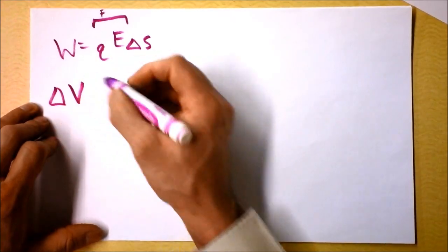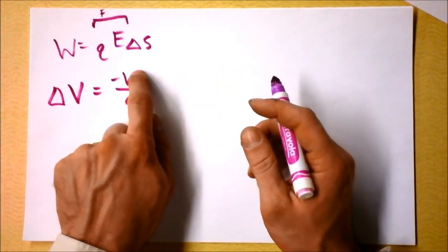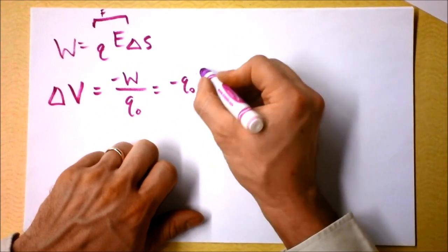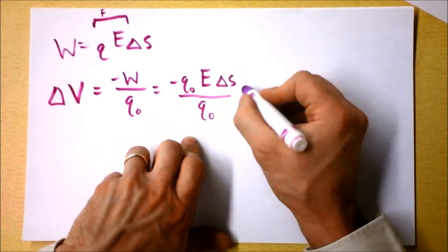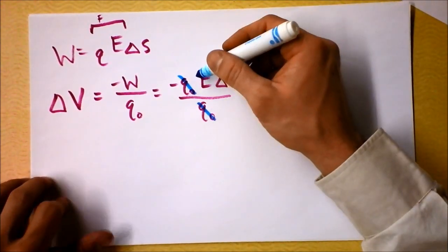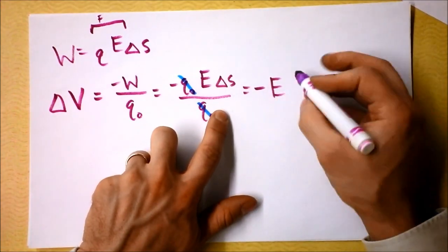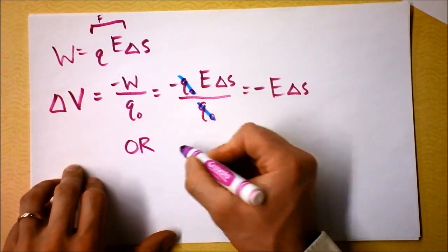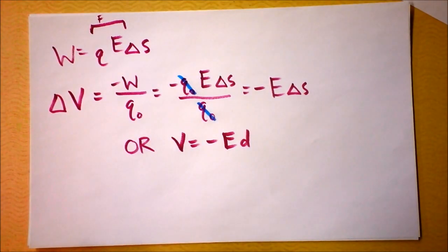The change in electric potential as I move from one spot to another is the change in energy divided by charge, which is the same as negative work divided by charge. Plugging in — charge times electric field times ΔS divided by Q₀ — the charges cancel. We find that the change in electric potential is negative electric field times how far you've gone in the direction of the field, which we can call D. So V = -ED.